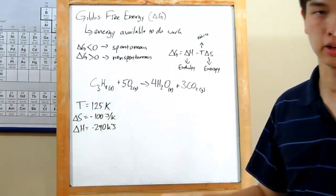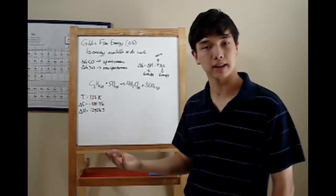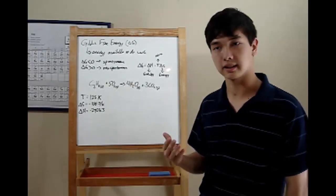If your delta G is greater than zero, your reaction is non-spontaneous, meaning you'll have to add energy of some sort, usually either kinetic or heat.